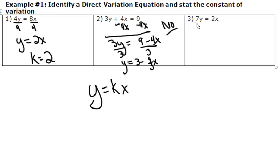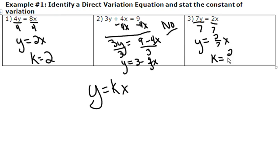For number 3, if I want to solve for y, this is 7 times y, so I would do the opposite and divide. I get y equals 2 divided by 7, which doesn't go in evenly, so I'm going to leave it in fraction form. I have y equals 2 sevenths times x. This is a direct variation equation because it's in the form y equals k times x. My k value, or the value in front of x, is 2 sevenths. This is how we identify a direct variation equation.